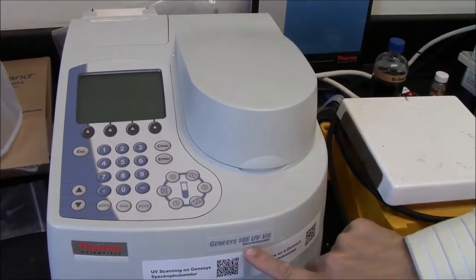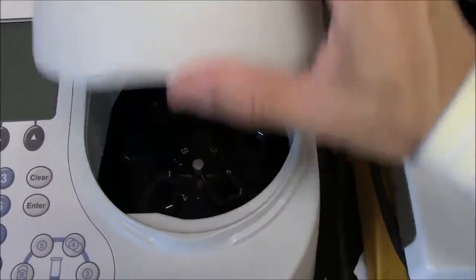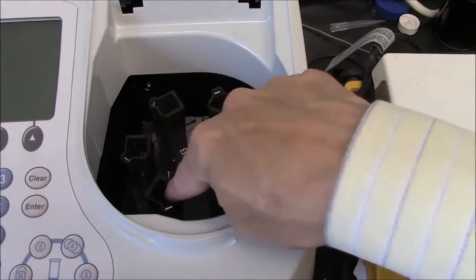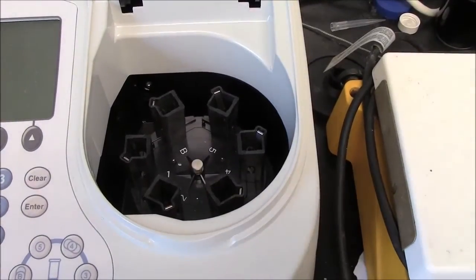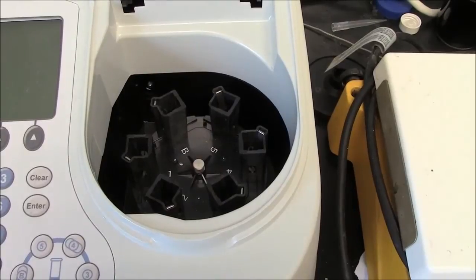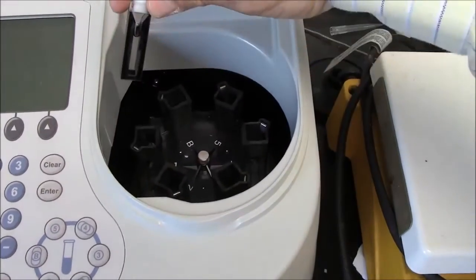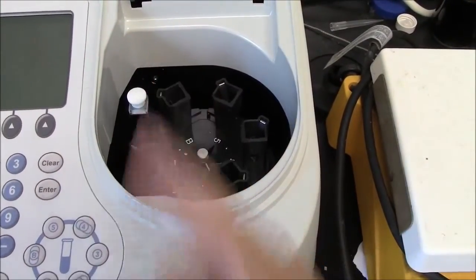This is an actual spectrophotometer, a Genesis 10S. Inside this compartment is a contraption that can hold six cells, six cuvettes. Typically, you will only have one cuvette, so this is not necessarily useful for you as a beginner. You have to align the clear faces so that a light beam passing in this direction would go through the clear faces.